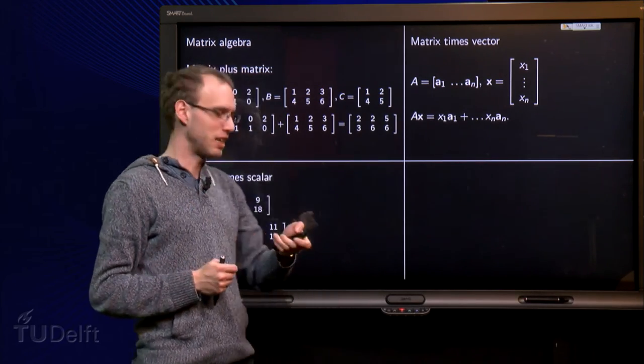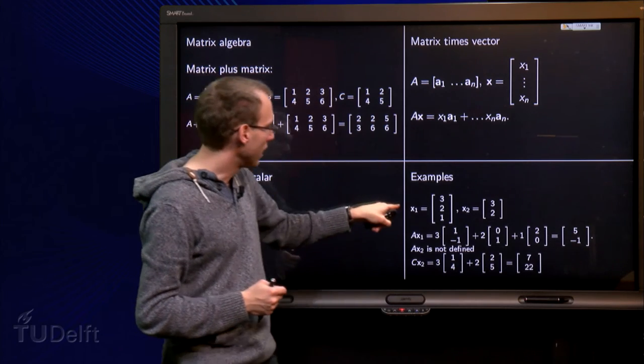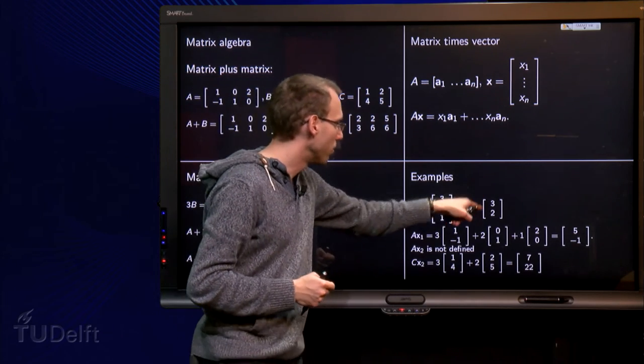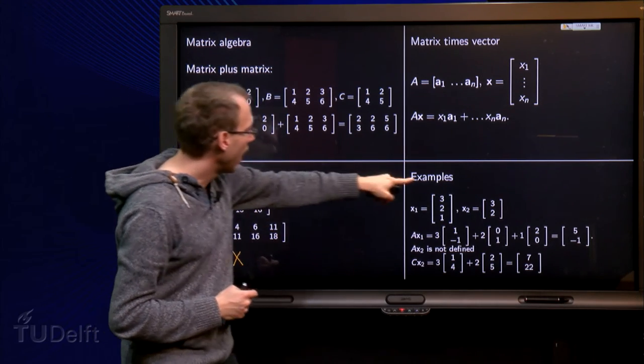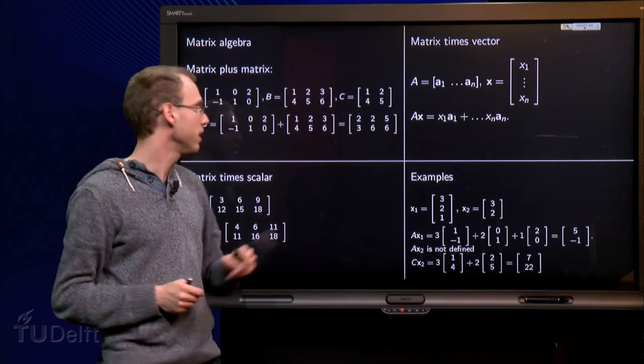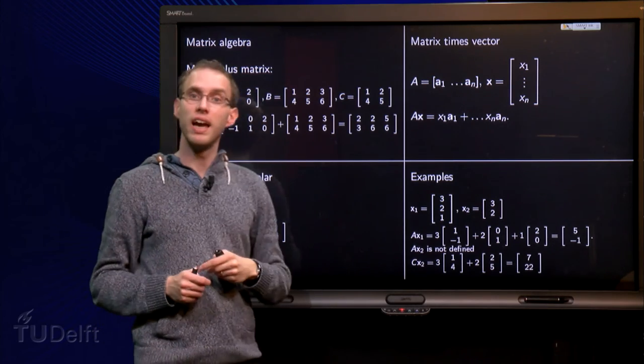Let's do this in an explicit example. Take X1, 3, 2, 1, and X2, 3, 2. Now we want to compute A times X. The height of X1 is 3, the width of A is 3, so we are able to compute A times X1.